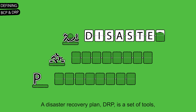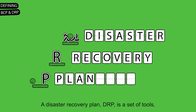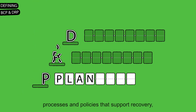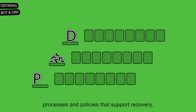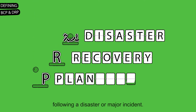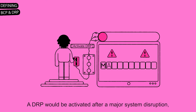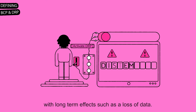A Disaster Recovery Plan, or DRP, is the set of tools, processes and policies that support recovery following a disaster or major incident. A DRP would be activated after a major system disruption with long-term effects such as a loss of data.